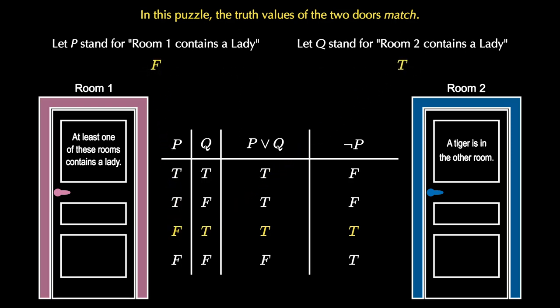But the fact that P is false means that room one contains a tiger and the fact that Q is true means that room two contains a lady. So we would open room two's door to find the lady.